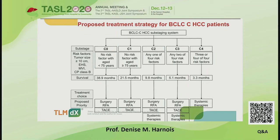For C2 — one out of four risk factors — overall survival was 9.8 months, and they recommended considering surgery, RFA, or TACE in some patients, while others may be good candidates for systemic therapies. C3 — two of the four risk factors — had an average overall survival of 5.1 months, with surgery, RFA, TACE, or systemic therapies recommended. C4 — three or four risk factors — had an average survival of 3.3 months, and these patients were recommended for systemic therapies, again noting that sorafenib was utilized in this study.